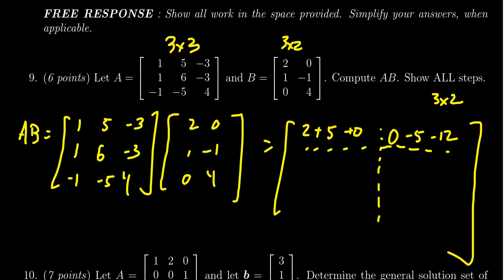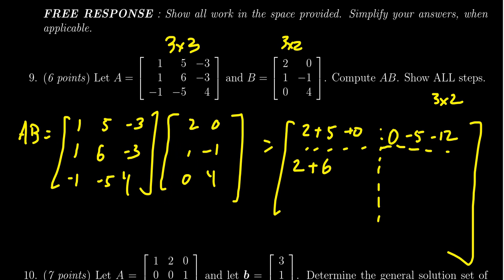Next we're going to do row two times column one. We get one times two which is two, plus six times one which is six, and then minus three times zero which is zero. Then we move on to row two times column two.